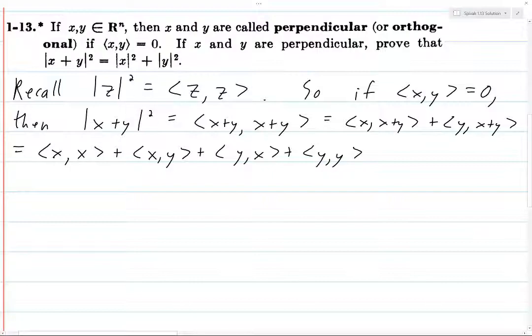And it turns out that the inner product of x and y is the same as the inner product of y and x. And so this is precisely the norm of x squared plus two times the inner product of x and y.